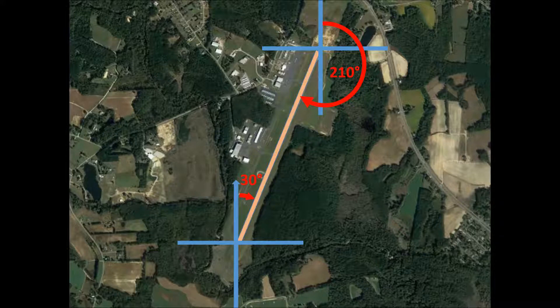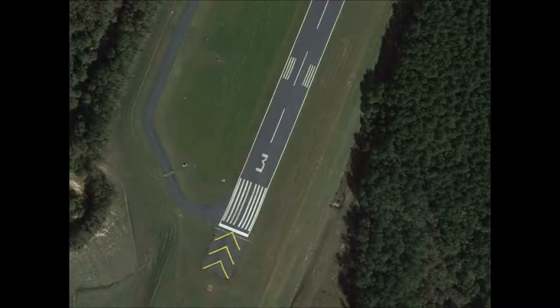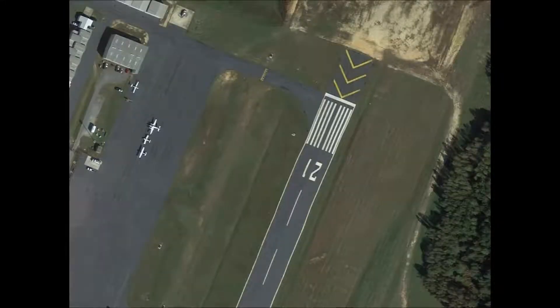For actually labeling the runway, we round to the nearest 10 degrees, so the number we'll see on the runway is the number 3, representing a 30-degree difference from north. The other end of the runway will be 21, so this will be known as runway 21, representing its direction of 210 degrees from north in the clockwise direction.